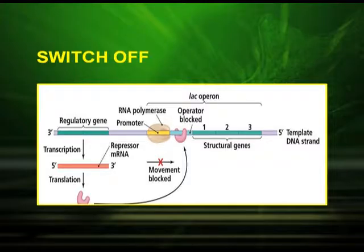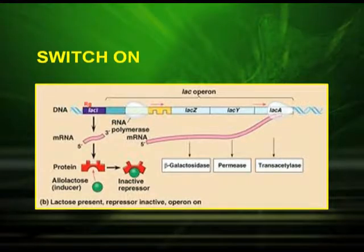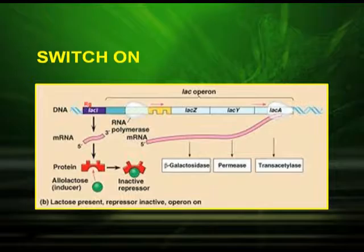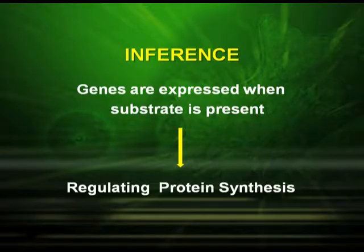When lactose is present in the medium, it becomes a switch-on condition. In the presence of lactose, the repressor binds to the lactose, making the repressor inactive, so the repressor no longer binds to the operator. The operator is free, RNA polymerase functions and transcribes the three structural genes, and the respective enzymes are produced. The inference is that genes are expressed when the substrate is present — here, the substrate is lactose — and that is how it regulates protein synthesis.